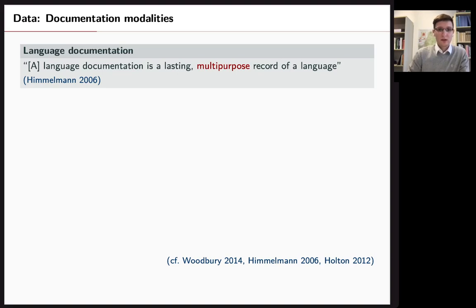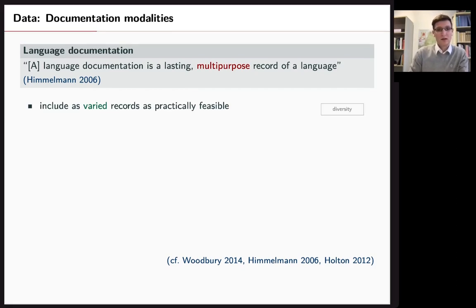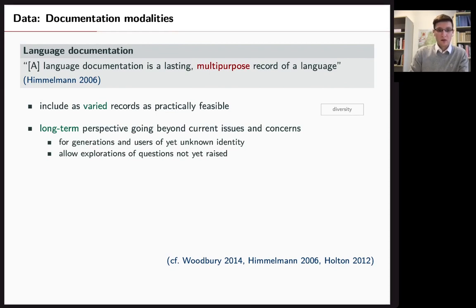For language documentation you would say it has to be a lasting and multi-purpose record. So this gives us exactly what we just said. Varied records that give us diversity in the data sets. And also a long-term perspective. So it's not just you that's interested in the data. Maybe in future generations someone could use your data for something completely different for a different purpose. And for this the data set should be pre-processed in a theory-neutral way and standardized.